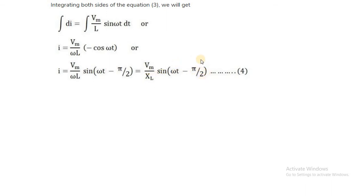This minus pi by 2 is the phase angle — that is, the phase angle difference between voltage and current in this pure inductive circuit. How much is the phase angle difference between voltage and current in this pure inductive circuit?